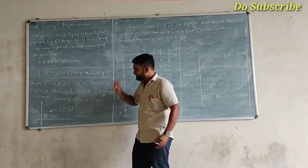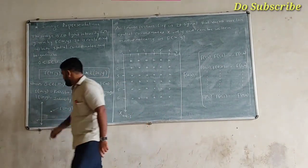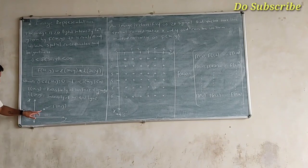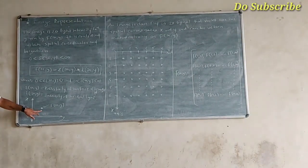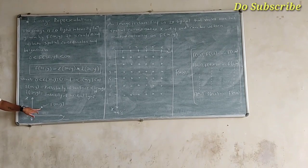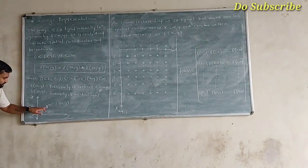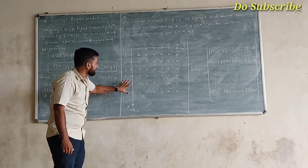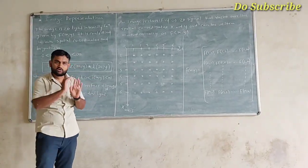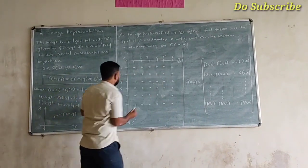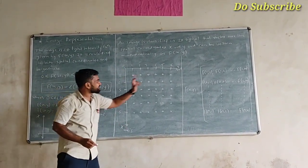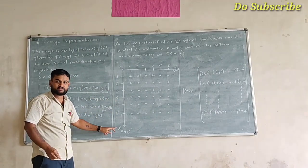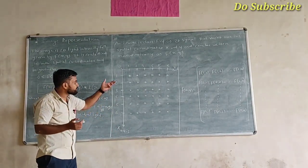This is a two-dimensional image. We have coordinates x and y. On both x and y coordinates, we have a point that has intensity and reflectivity given by f(x, y). We can understand by looking at the diagram. The image has a y coordinate and x coordinate. On the y-axis we have six different portions, on the x-axis we also have six different positions — these are the coordinates, which is nothing but the sampling of the image.